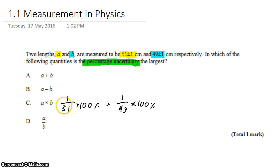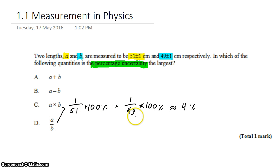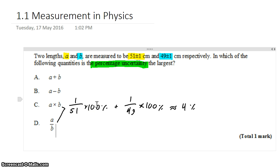You'll find that each term is about 2%, for a total of about 4%. Interestingly, it's the same for part D — whether you're multiplying or dividing, you add the percent uncertainties. That means both cases have the exact same percent uncertainty, which means neither one can be the correct answer, because neither one is the largest.